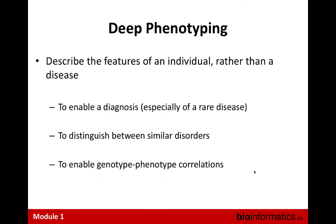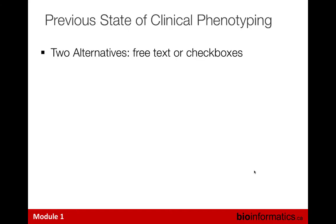When I talk about patient phenotype, I want to clarify the terminology. Deep phenotyping means describing the features of an individual rather than of a disease — so not just saying they have diabetes, but describing whether they have obesity, what their insulin levels are. You're breaking down the disease into its constituent features, because when working with a rare disease you're often just trying to establish what the diagnosis is. You need to be working at the symptom level, not the disease name level.